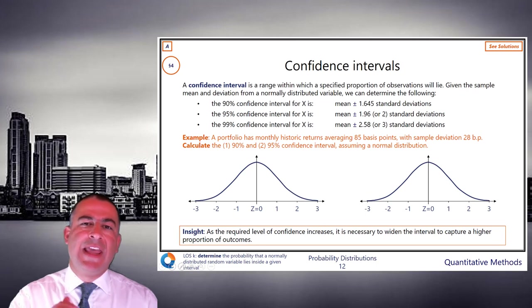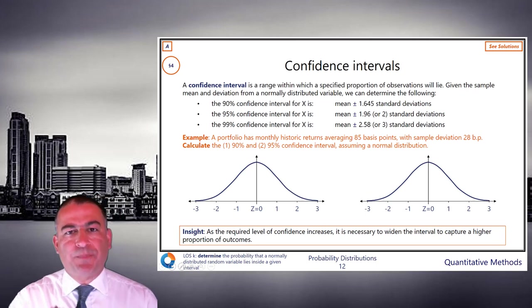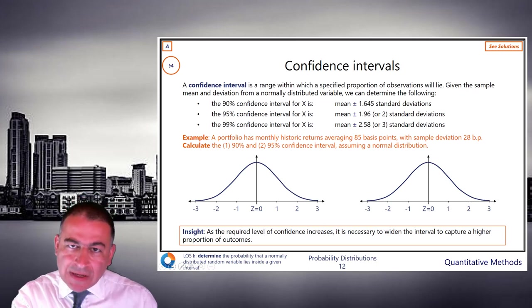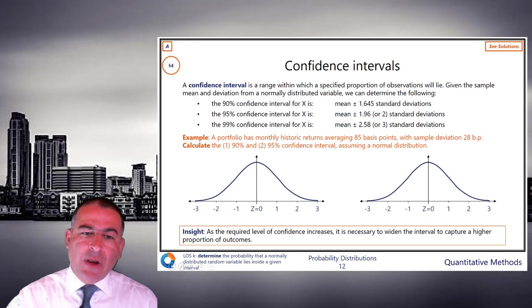What a confidence interval is, it's a range within which we are x% confident, typically something like 95% confident that something is going to fall in this range. In a simple example, we're going to see confidence intervals really defined twice.